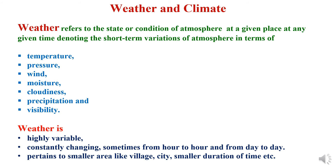Now to study weather and climate — weather refers to the state or condition of the atmosphere at a given place at any given time, representing short-term variations of the atmosphere in terms of temperature, pressure, wind, moisture, cloudiness, precipitation, and visibility. Weather represents atmospheric changes for a shorter period. By nature, weather is highly variable, constantly changing — sometimes from hour to hour and sometimes from day to day. Weather is related to a smaller area like a village or city for a shorter duration of time.